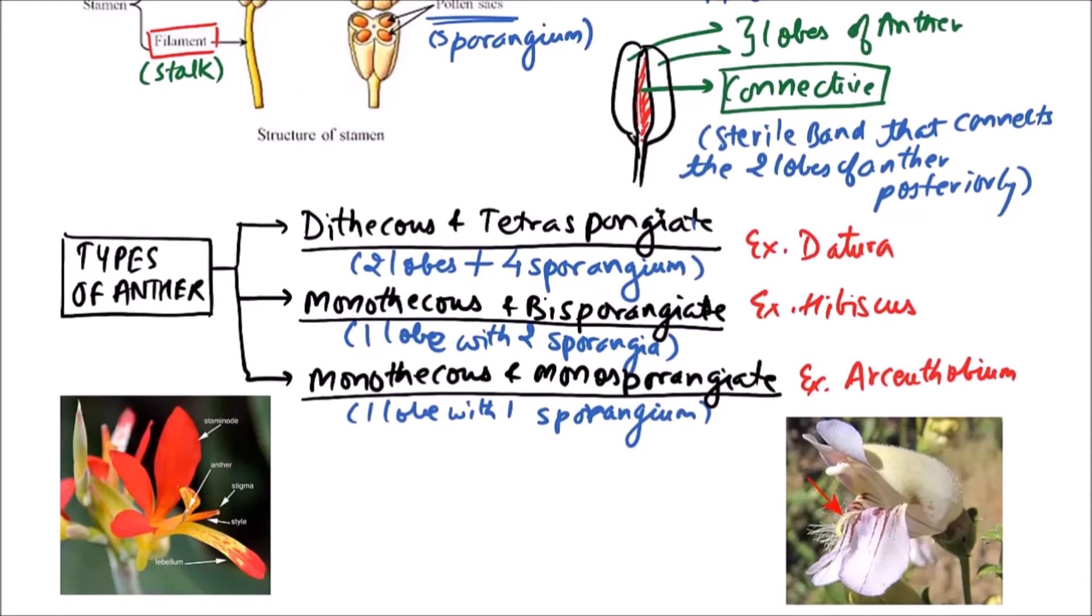So dithecous and tetrasporangiate may appear like this. While the monothecous and bisporangiate will appear like this. And monothecous and monosporangiate will appear like this.